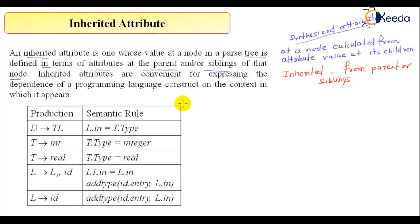Now, let me complete the statement. Inherited Attributes are convenient for expressing the dependence of the programming language construct on the context in which it appears. That is the complete statement, but the main takeaway is the parent or sibling.